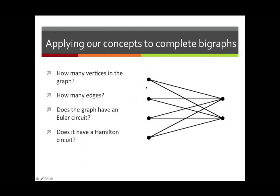Looking at this particular example, how many vertices does it have? That's pretty clear — it has six vertices: four on the left and two on the right. How about the edges? If you count them, you'll see eight. There are two edges per left vertex, giving two here, two here, two here, and two here — a total of eight edges.